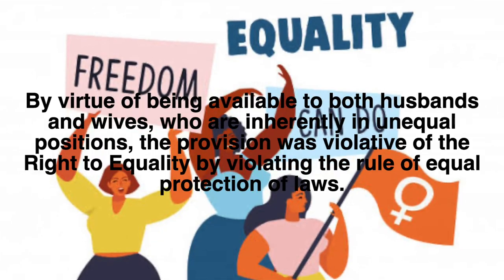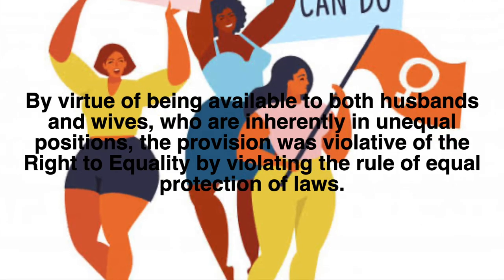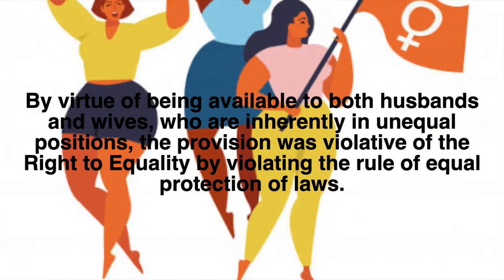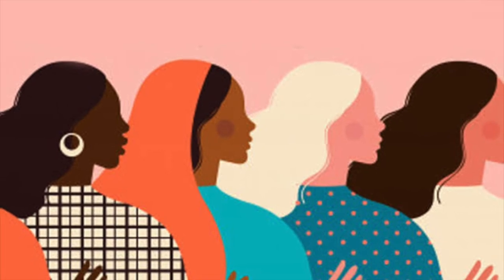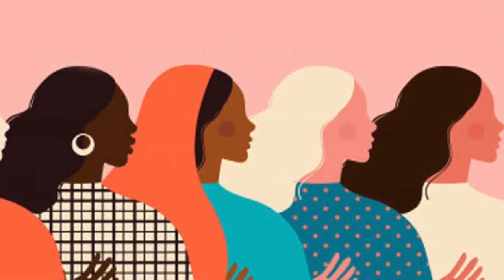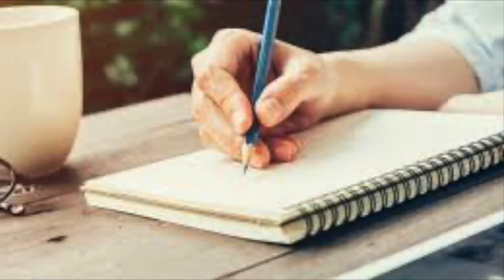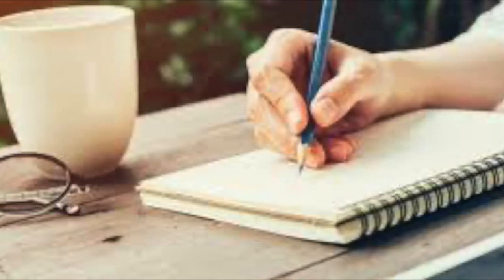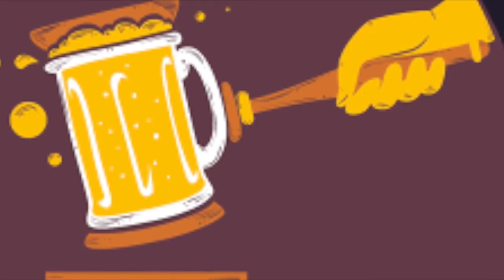It was further argued that by virtue of being available to both husbands and wives, who are inherently in unequal positions, the provision was violative of the right to equality by violating the rule of equal protection of laws. The Andhra Pradesh High Court agreed with these arguments and held that in effect the decree compelled an unwilling wife to have sexual intercourse with her husband, thereby violating her bodily autonomy. The court struck down Section 9 of the Hindu Marriage Act, declaring it violative of Articles 14 and 21 of the Constitution.